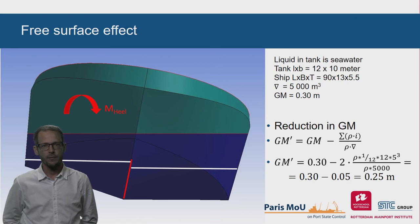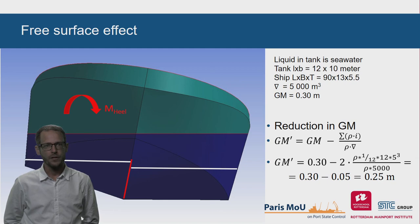The two separate tanks together give a reduction in GM of 0.05 meter. Compared with the initial reduction of 0.2 meter, a significant improvement. In this configuration, the resulting GM liquid easily meets the required 15 centimeters.